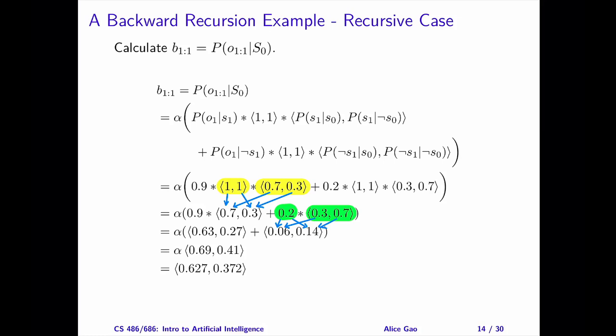The second point: when multiplying a scalar with a distribution, for example, when we multiply 0.2 with (0.3, 0.7), the first number in the result is 0.2 multiplied by the first value in the distribution, and similarly for the second value.